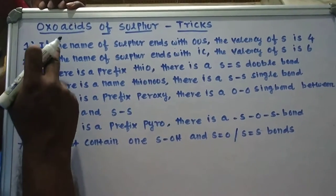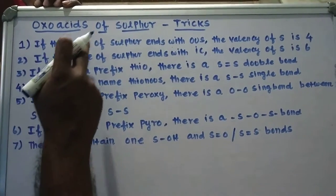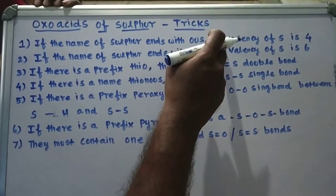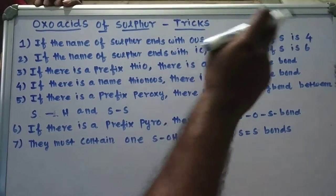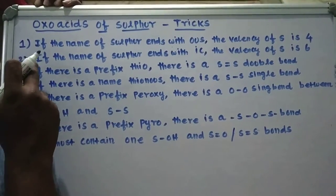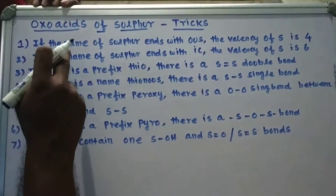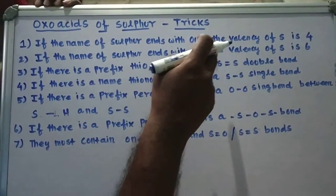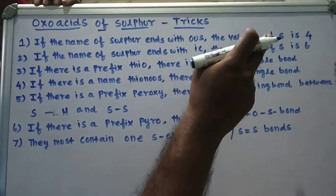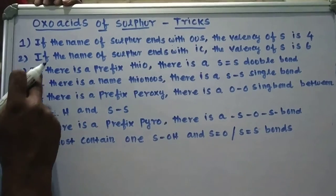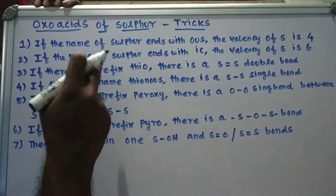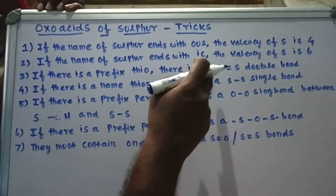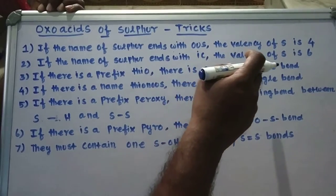First rule: if the name of the sulfur acid ends with -OUS, the valency of sulfur is 4. Second rule: if the name ends with -IC, the valency of sulfur is 6. Third rule: if there is a prefix thio, there is a sulfur-sulfur double bond.